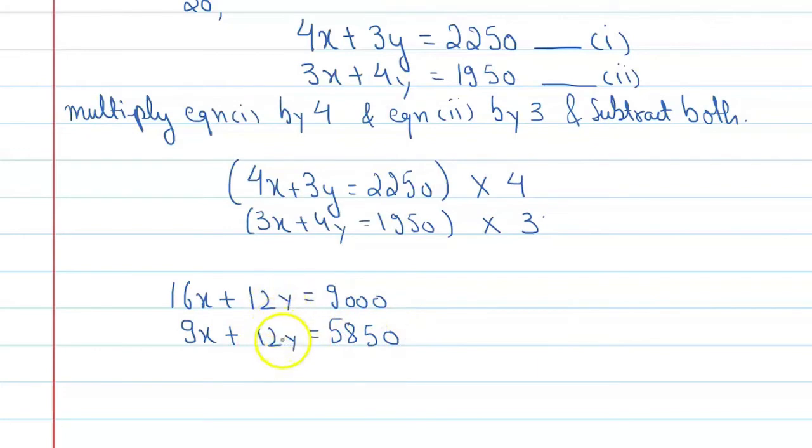You can see that the coefficient of y is the same. Now we will subtract. What we do is change the sign of the terms in the second equation. See, 12y and 12y got cancelled. 16x minus 9x gives us 7x. If we minus this, we get 3150.